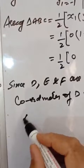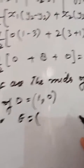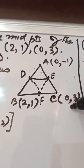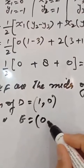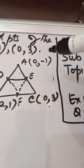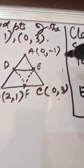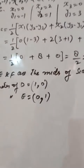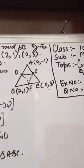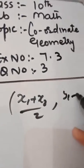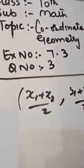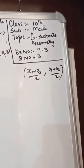Similarly, coordinates of E, the midpoint of AC: ((0 + 0)/2, (3 + (-1))/2) = (0, 1). The midpoint formula is: when a point is the midpoint of a line segment, the formula is ((x1 + x2)/2, (y1 + y2)/2).